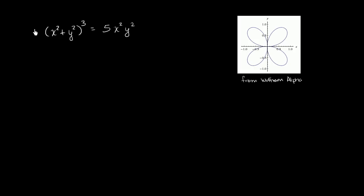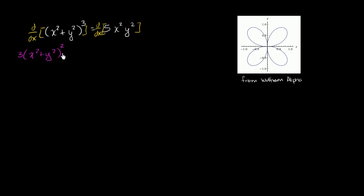So let's apply our derivative operator to both sides — the derivative with respect to x on the left, and the derivative with respect to x on the right. We apply our chain rule: the derivative of something to the third power with respect to that something is going to be 3 times that something squared. Then we have to multiply that times the derivative of the something with respect to x, so the derivative of x² with respect to x is 2x.